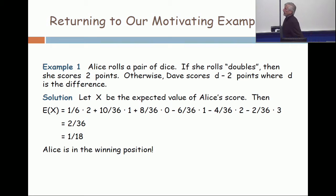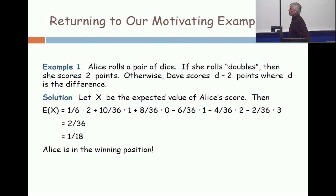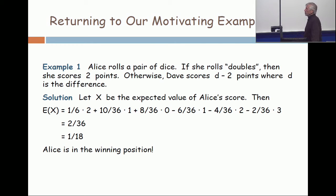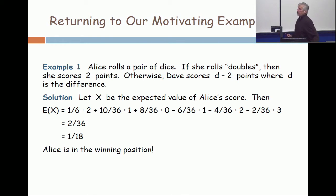The probability of getting a difference of three is six over thirty-six, so Dave wins one and Alice loses one. The probability of getting a difference of four is two over thirty-six — that's a loss of two for Alice — and two over thirty-six gives a loss of three. When you do that calculation, you get two over thirty-six, which is one over eighteen. So on average, Alice expects to win one over eighteen.